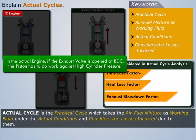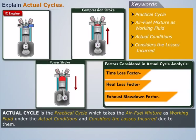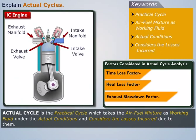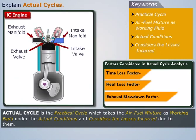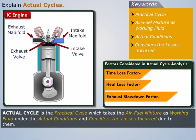Exhaust blowdown factor: In the actual engine if the exhaust valve is open at BDC, the piston has to do work against high cylinder pressure. To reduce this, the exhaust valve is opened a little bit before the piston reaches BDC, which then suddenly reduces the pressure of the chamber. Thus a part of expansion stroke is lost, which reduces the work and thus the efficiency of the engine is reduced.